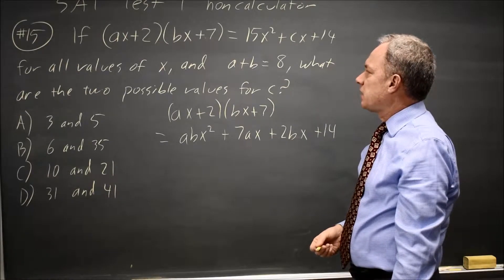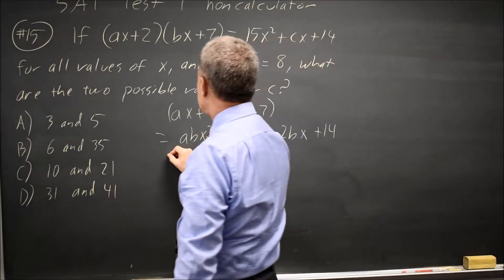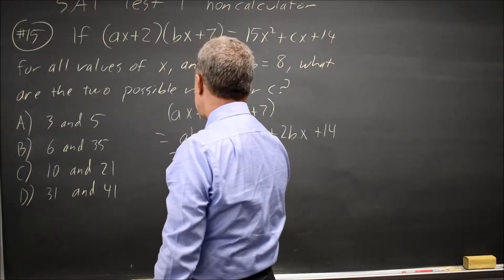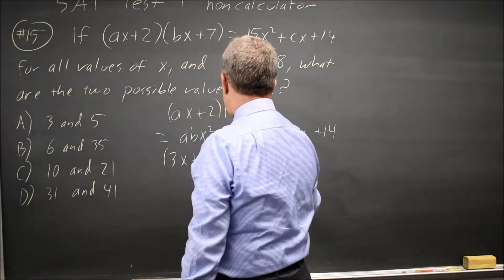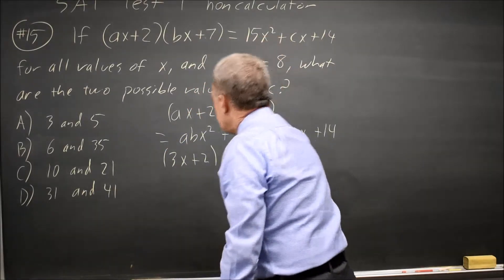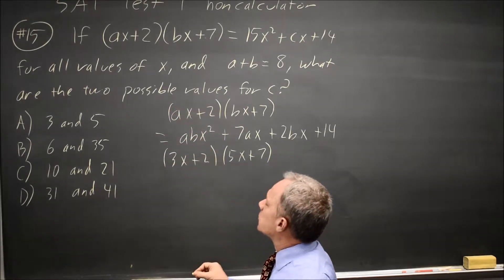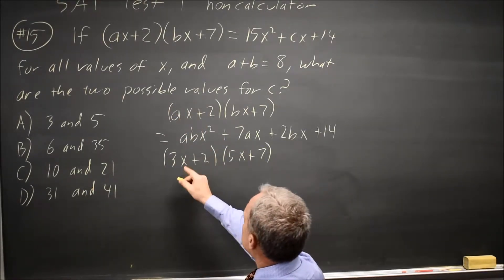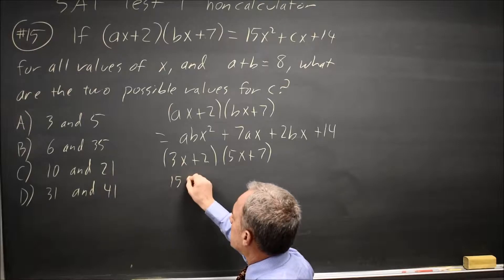A natural choice is A equals 3, B equals 5. So this is 3X plus 2, 5X plus 7. And here FOIL gives us 3 times 5 is 15, times X times X is 15X squared.